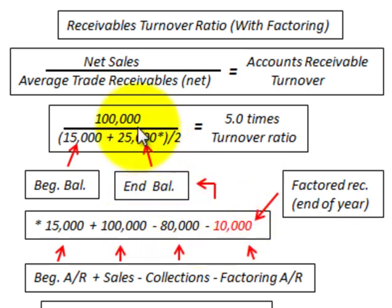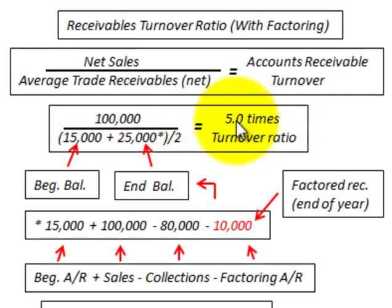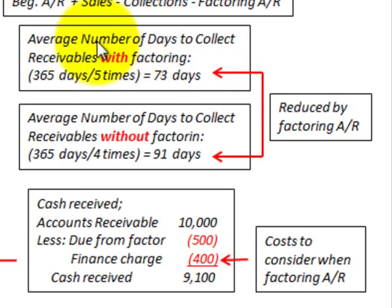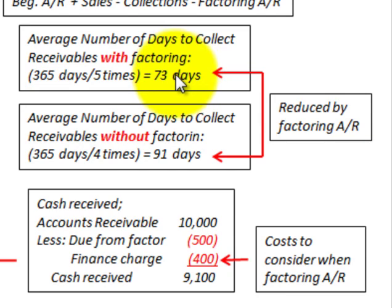Taking $15,000 plus $25,000 and dividing by 2 gives average receivables of $20,000. Dividing $100,000 net sales by $20,000 gives us five times as the turnover ratio. Then 365 days divided by five gives us 73 days as the average collection period with factoring.